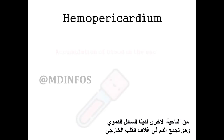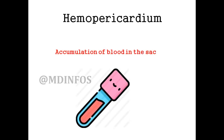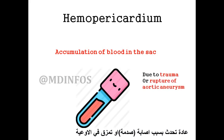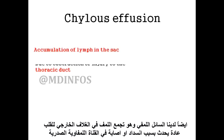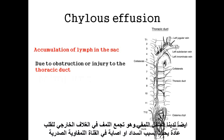On the other side, we have hemopericardium, in which we have an accumulation of blood inside the sac, usually caused by trauma or rupture of an aortic aneurysm. We also have chylous effusion, in which there is an accumulation of lymph in the pericardial sac, usually due to an obstruction or injury to the thoracic duct.